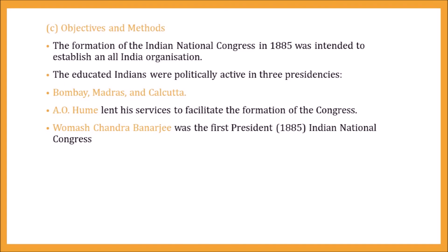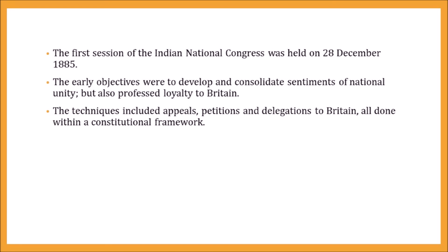Objectives and Methods: The Indian National Congress was formed in the year 1885 with the intention of establishing an all-India organization. A group of educated Indians were politically active in three presidencies — Bombay, Madras, and Calcutta. A.O. Hume helped and was instrumental in the formation of the Congress. Umesh Chandra Banerjee was the first President of the Indian National Congress. The first session was held on 28 December 1885.